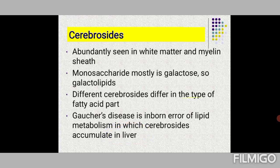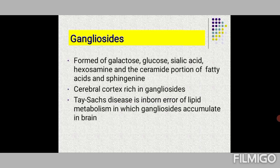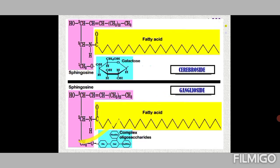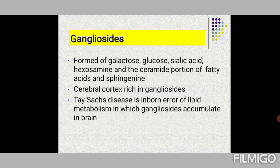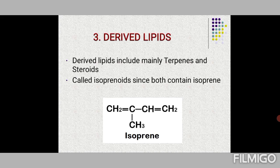In Gaucher's disease, accumulation is in the liver; in Tay-Sachs disease, gangliosides accumulate in the brain. Gangliosides are composed of galactose, glucose, sialic acid, and hexosamine forming the oligosaccharide, combined with a ceramide portion containing fatty acid and sphingosine. The cerebral cortex is rich in gangliosides. Now we move on to derived lipids.